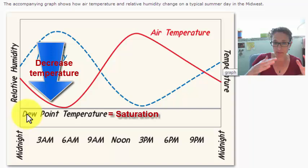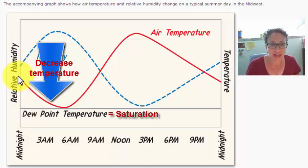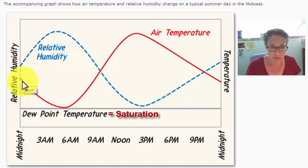And as we decrease the temperature, we're pushing that air closer to saturation. So at night here, this red line, the air temperature is decreasing, we're getting closer to the dew point temperature, closer to saturation. As we get closer to saturation, the relative humidity goes up.